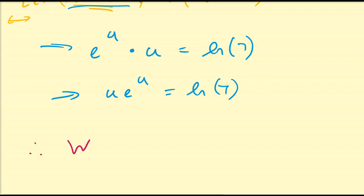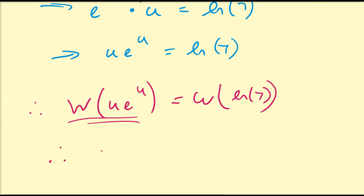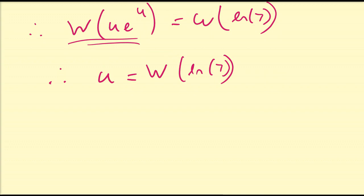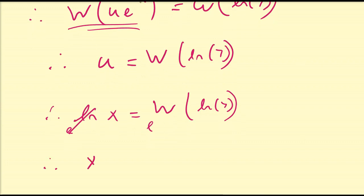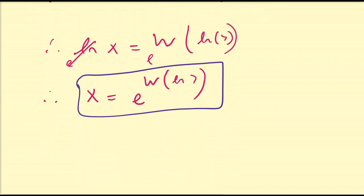Applying Lambert W to both sides: W(u·eᵘ) = W(ln 7), so u = W(ln 7). Since u = ln(x), we have ln(x) = W(ln 7). Exponentiating both sides to cancel the logarithm gives x = e^(W(ln 7)). This is the general solution to the equation xˣ = 7.